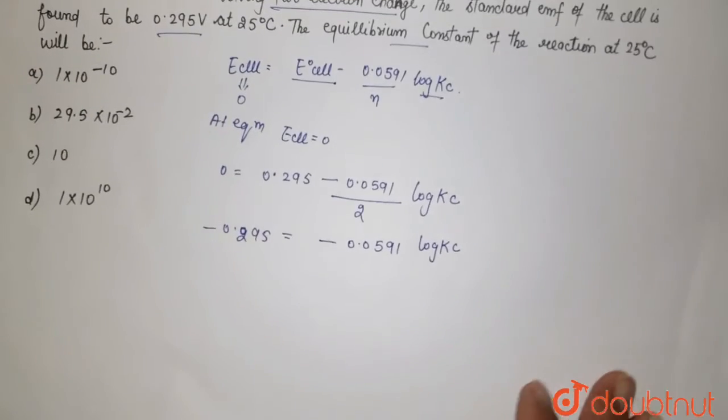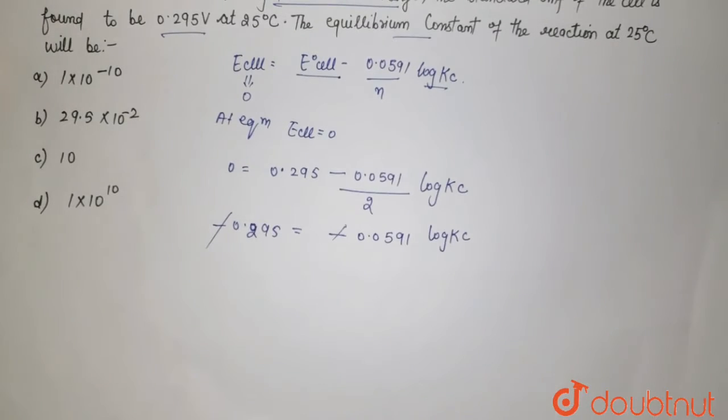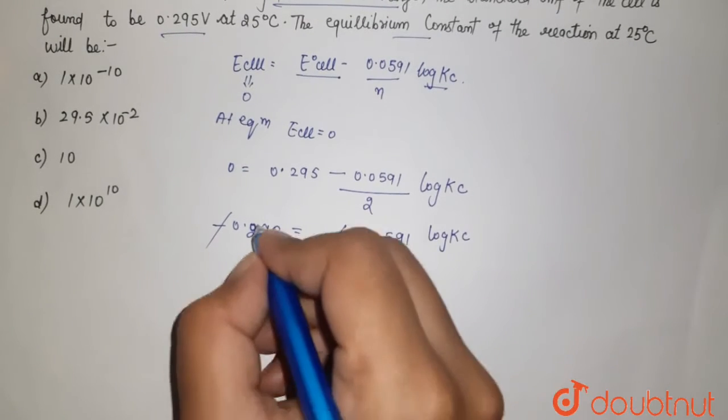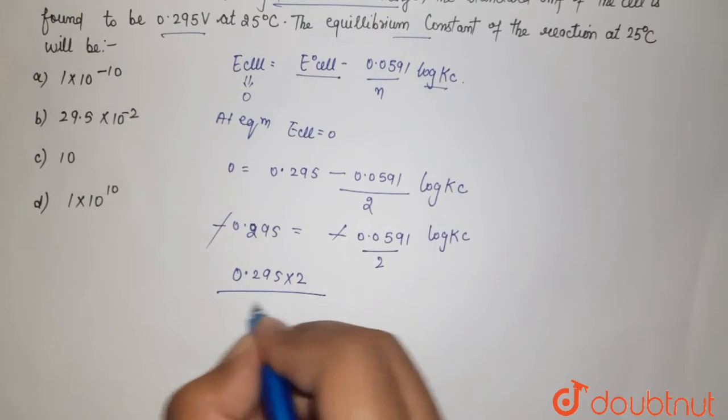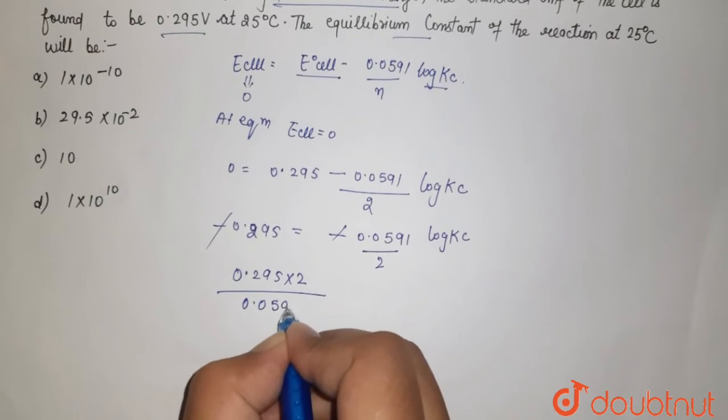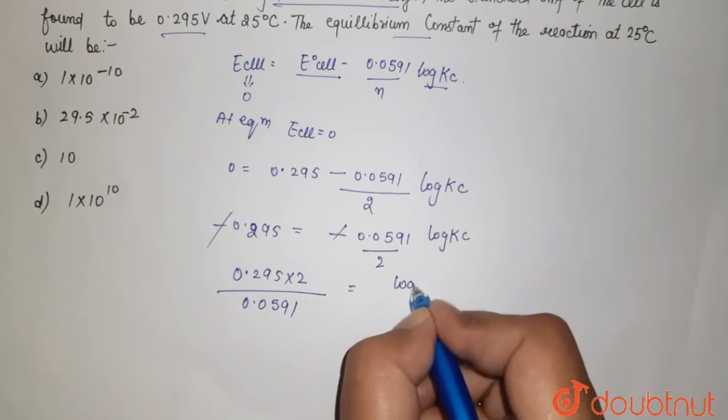If you see here, this minus has been cancelled from this. We have 2. This 2 will go over here. That is 0.295 into 2 upon 0.0591 which is equal to your log Kc.